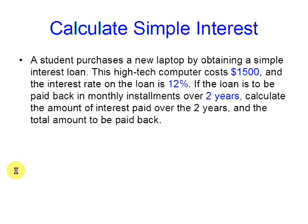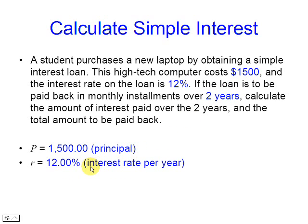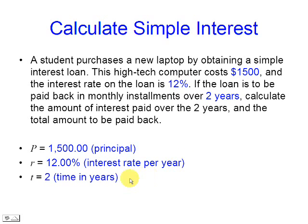So, in this case, P — the principal — is $1,500. R is the interest rate per year, 12%, and T, the time in years, is 2.